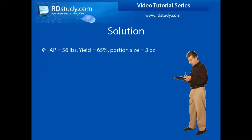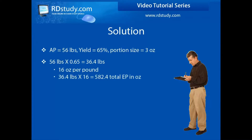First, determine the amount of total edible portion by multiplying the AP weight by the yield percent. So 56 pounds times 65% results in an edible portion amount of 36.4 pounds. Since the serving size is in ounces, let's multiply this by 16 to get the total EP in ounces. 36.4 times 16 equals 582.4 ounces.